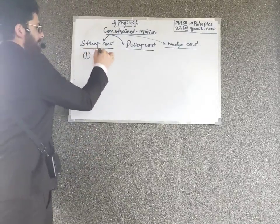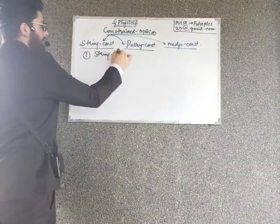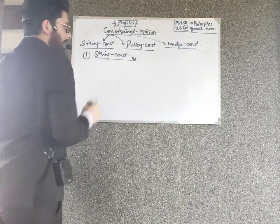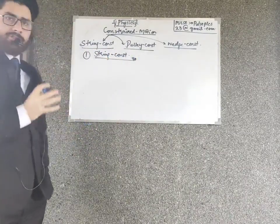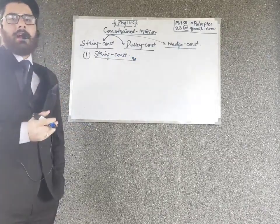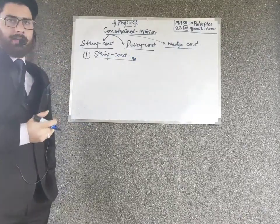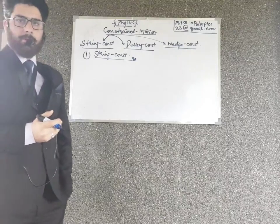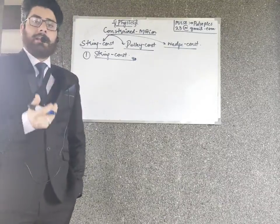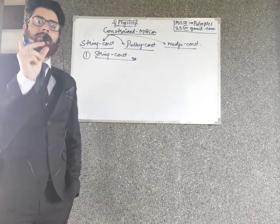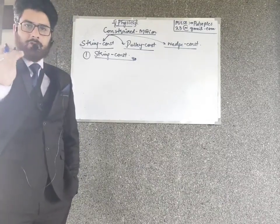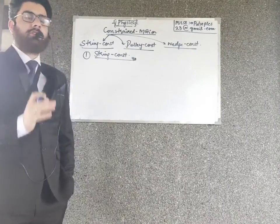String constraint — this is the constraint which is always applicable to strings. Obviously, when we are talking about connected motion problems, the string is ideal. Ideal means it is massless and inextensible. Inextensible means the length of the string will neither stretch — it will neither increase nor decrease.